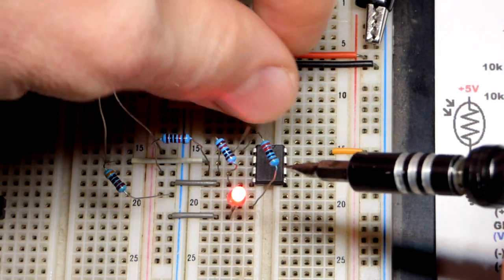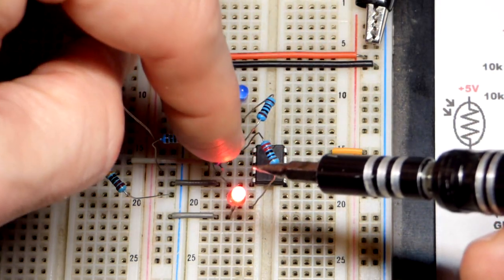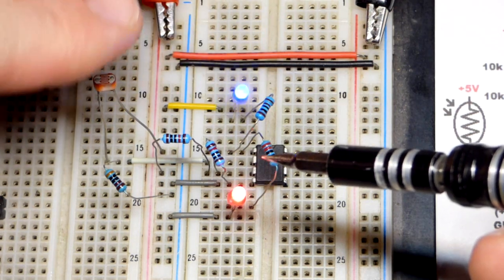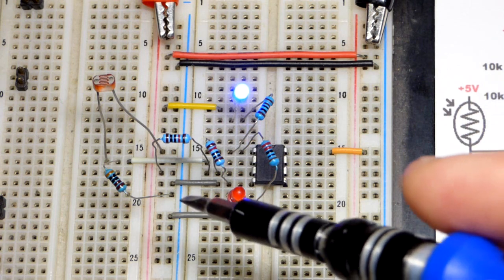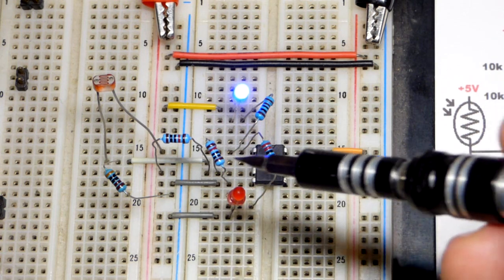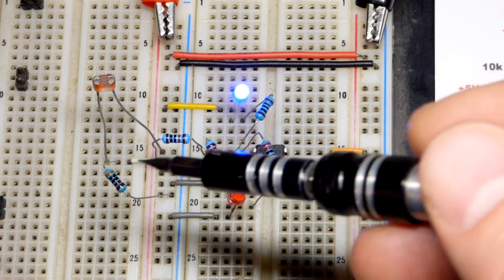You can see the two resistors coming from the output. You can see I got it dark enough when I got my hand over it to set the output high, and now it's bright enough where the output is low.